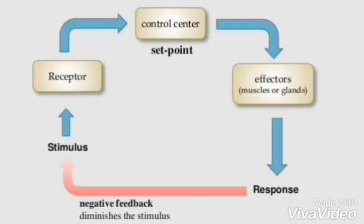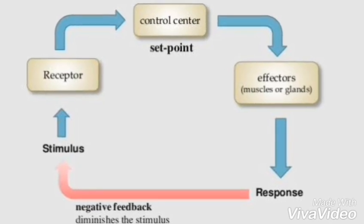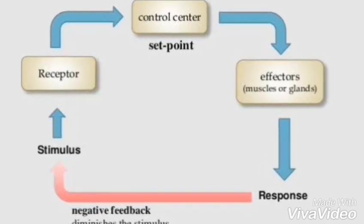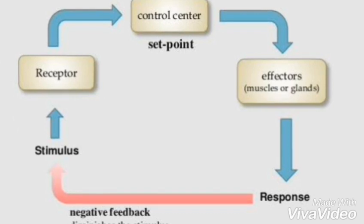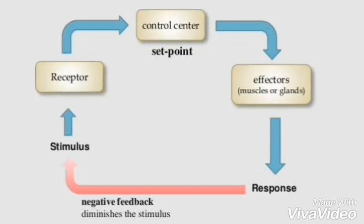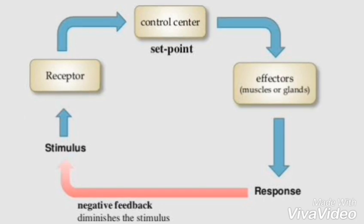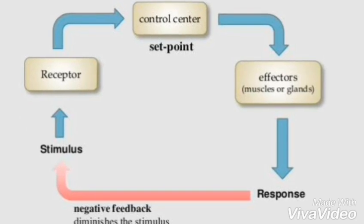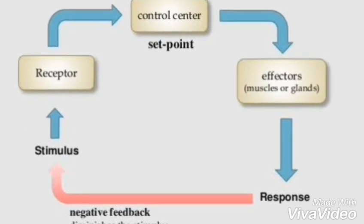Although there are normal fluctuations from this set point, the body's systems will often attempt to revert it. This is done by the components of the blood glucose homeostatic control system, which include the receptor — an organ or a cell which transmits a chemical signal to a sensory nerve due to an environmental change like a change in glucose levels.